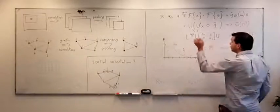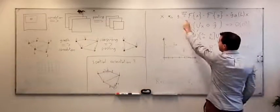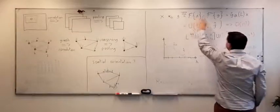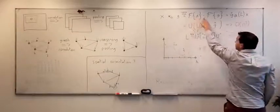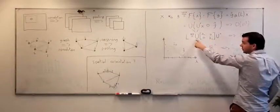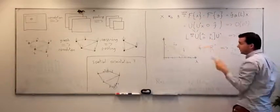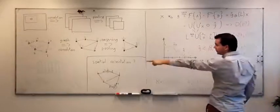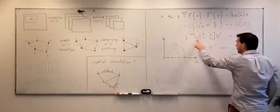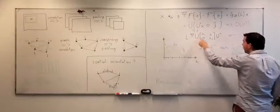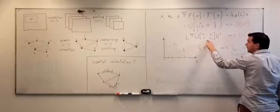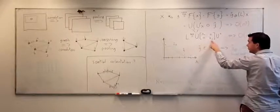The idea is to leverage the convolution theorem, which says that convolution is a multiplication in the Fourier domain. On graphs, the Fourier basis is given by the singular value decomposition of the graph Laplacian. This gives us the Fourier basis U and a set of n eigenvalues, analogous to frequencies.